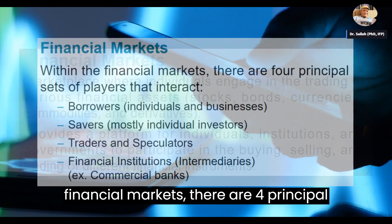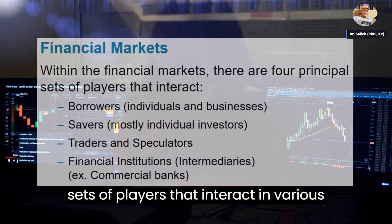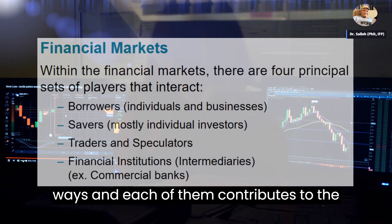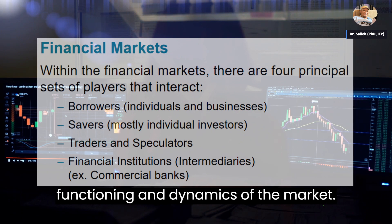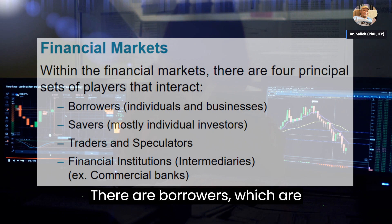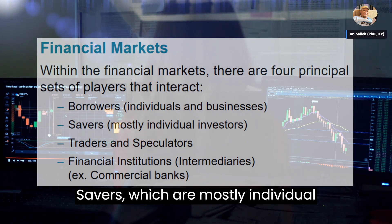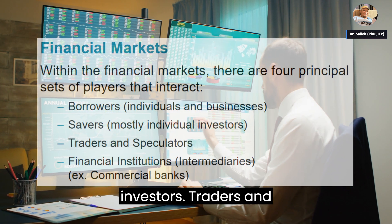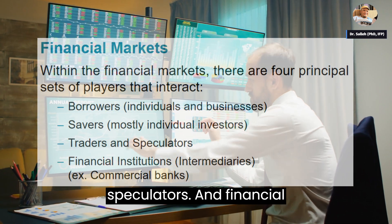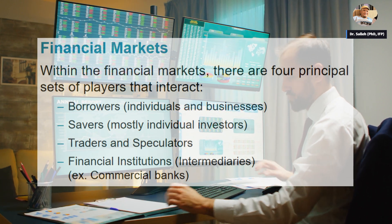Within financial markets, there are four principal sets of players that interact in various ways, and each of them contributes to the functioning and dynamics of the market. There are borrowers, which are individuals and businesses; savers, which are mostly individual investors; traders and speculators; and financial institutions, or intermediaries.